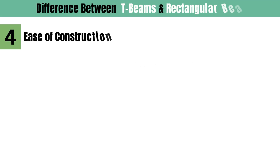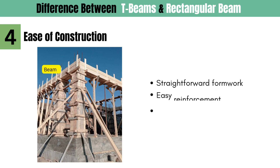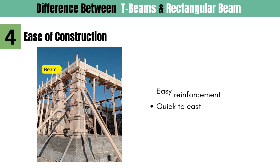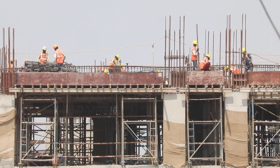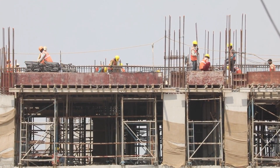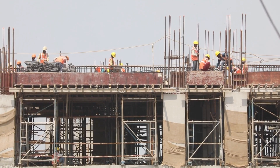Regarding ease of construction and practical site considerations: rectangular beams are simple to construct. They have straightforward formwork, easy reinforcement, and are quick to cast — ideal for residential buildings, small projects, or where speed and budget are key factors. But T-beams require more coordination. They must be cast monolithically with the slab, involve complex formwork and reinforcement alignment, and need careful curing to ensure strong slab-beam bonding. They are best suited for commercial structures, institutional buildings, and bridges where longer spans and efficiency are priorities.